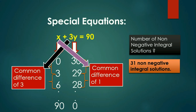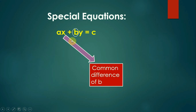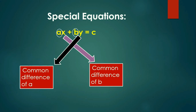We have 31 non-negative integral solutions as the values of y vary from 0 to 30 at a common difference of 1, giving us 31 solutions. In general, if we have an equation ax plus by equal to c, then the values of x would be at a common difference of b — the coefficient of y — and the values of y would be at a common difference of a — the coefficient of x. Essentially, the sum of two numbers equals a constant, and the values increase at a common difference depending on the coefficients.